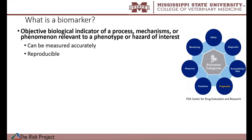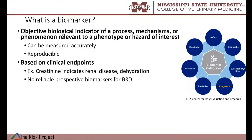The first thing I included in that definition is 'objective.' In practice and in medicine, we base our approach around evidence-based medicine, so this is something that needs to be capable of being measured accurately and is reproducible. We base the validity of biomarkers towards whatever disease we're analyzing on some type of clinical endpoint — for example, the use of creatinine indicating renal disease or dehydration in a serum chemistry. The fact of the matter is, in bovine respiratory disease, we don't have any reliable prospective biomarker for BRD. We have things that indicate disease after the fact — average daily gains, lung consolidation, lung lesions at necropsy — but nothing that can reliably predict when disease is going to occur.